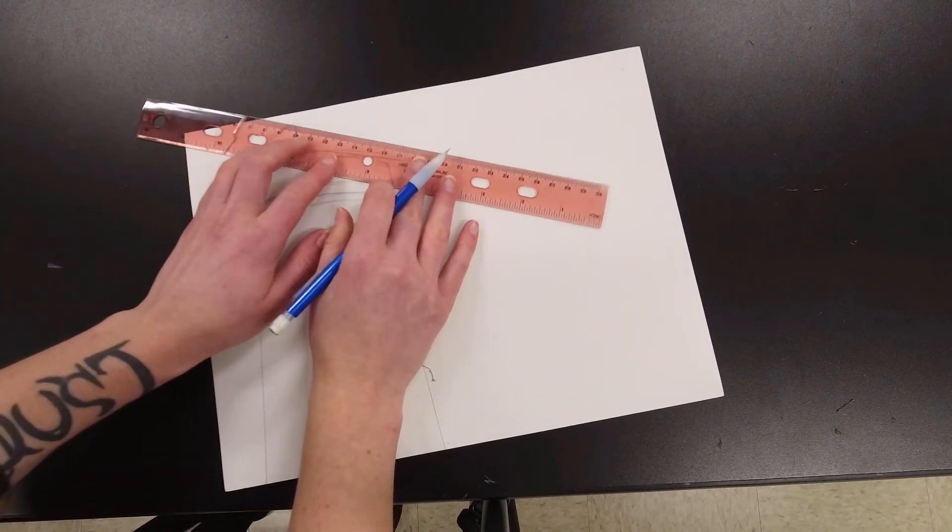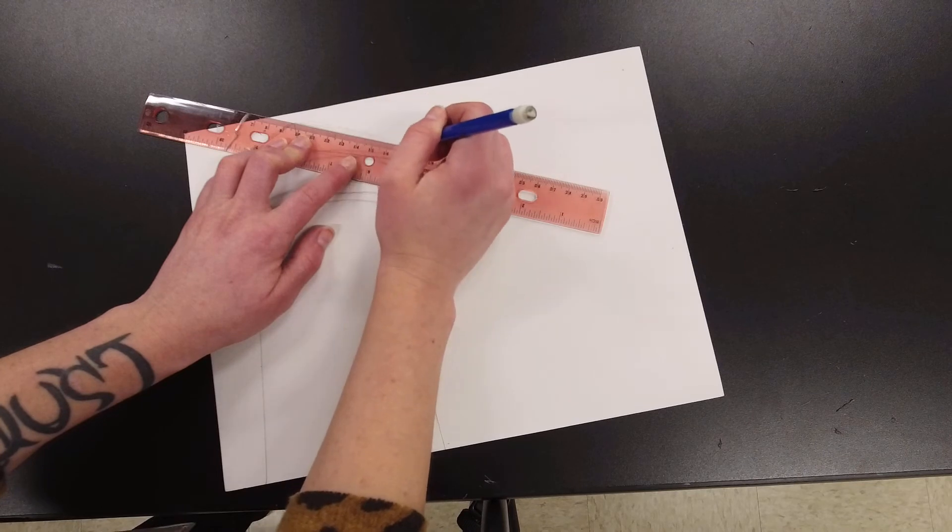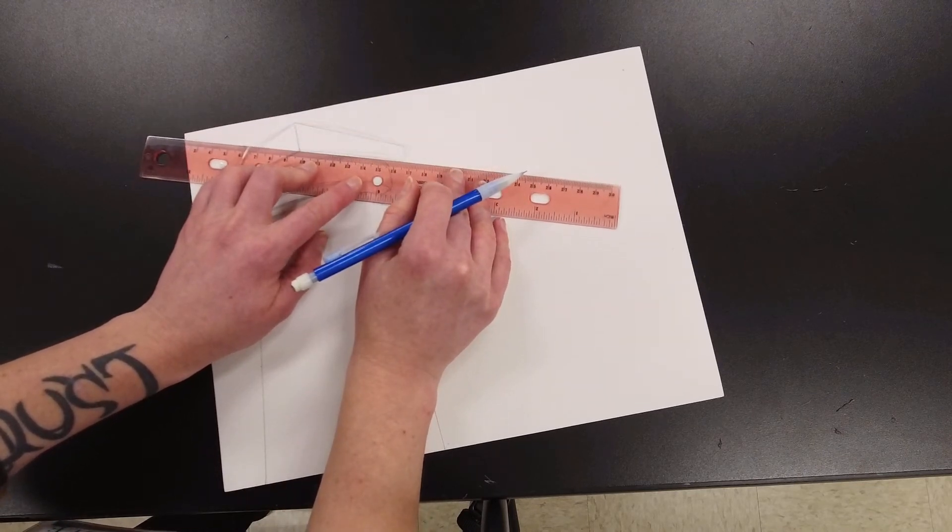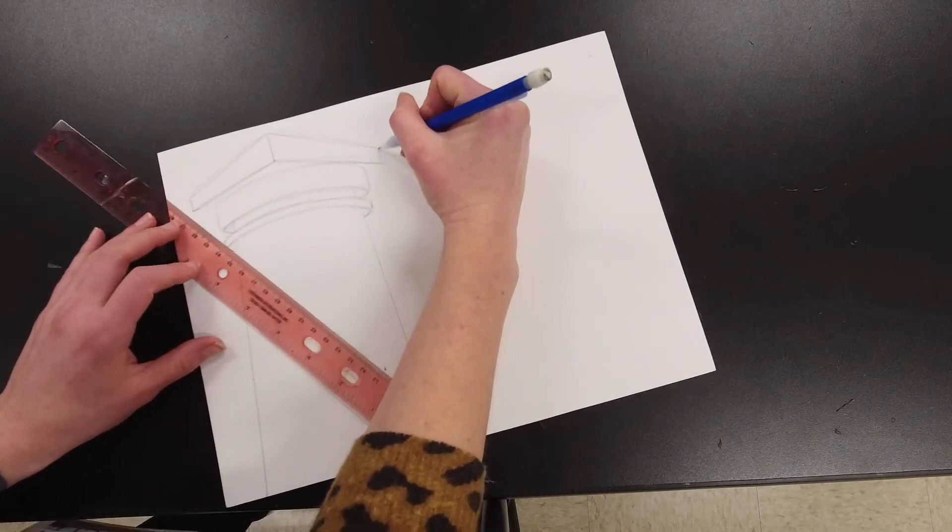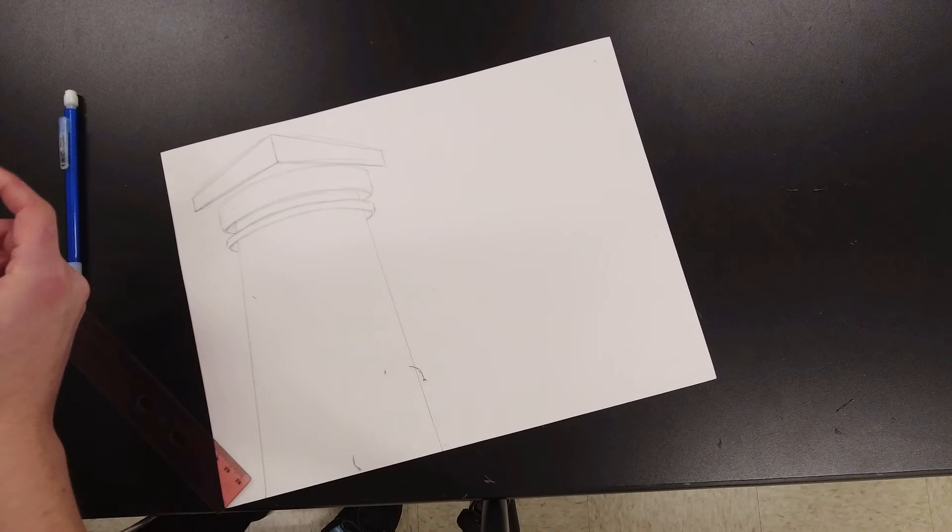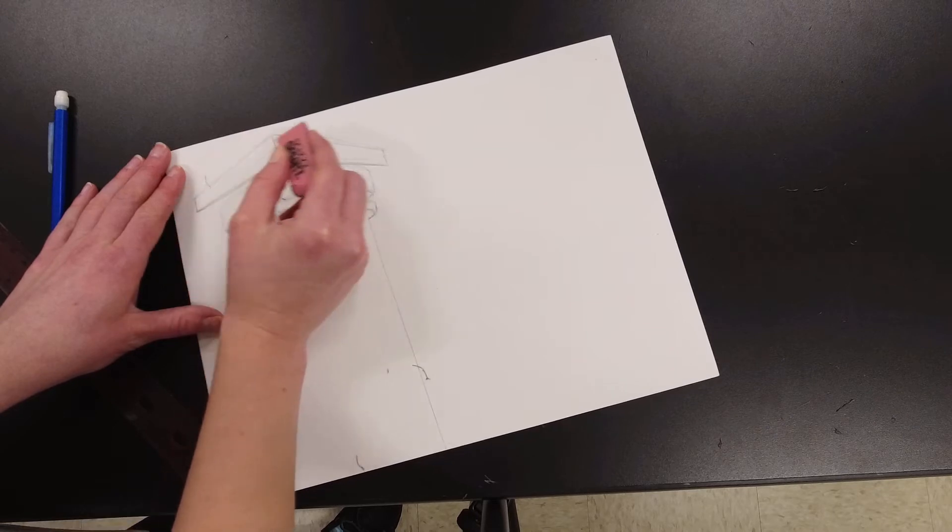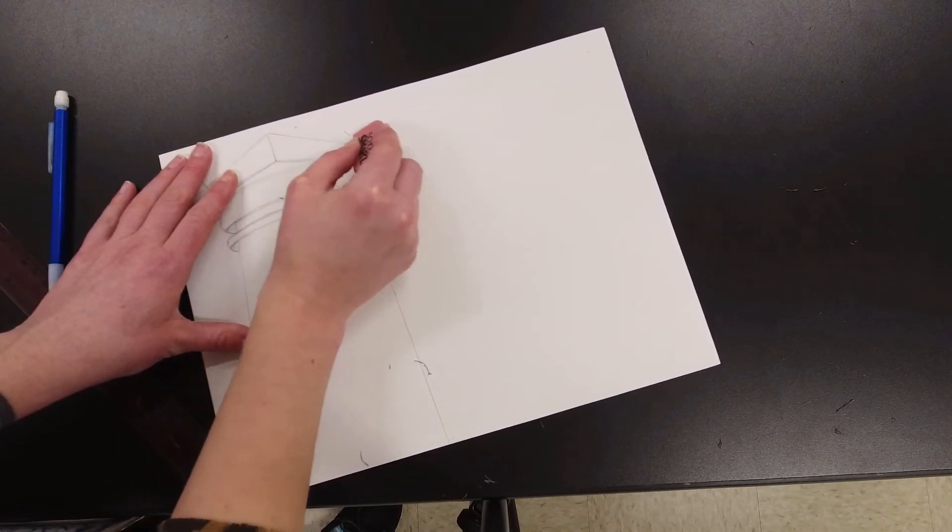You can definitely straighten those up with your ruler a little bit as well. Now because this is my sketch, I'm not as worried about making it perfect. On the final piece, I would definitely want to make sure that I'm making things as smooth and accurate and precise as possible. For the sketch, I'm more concerned with figuring out which type of column I'd like to draw the best.